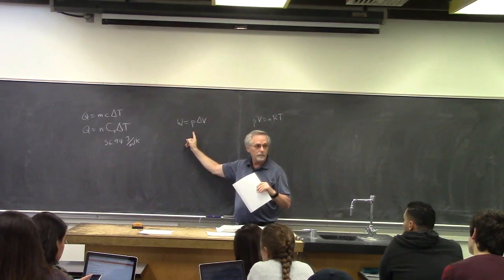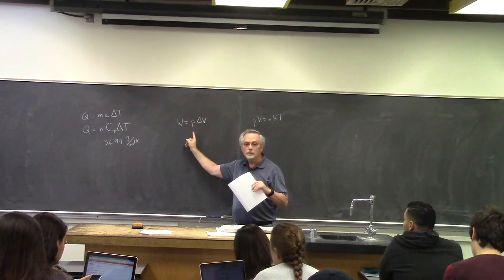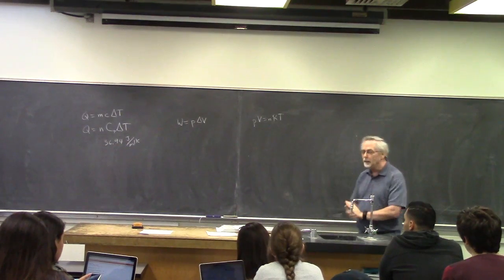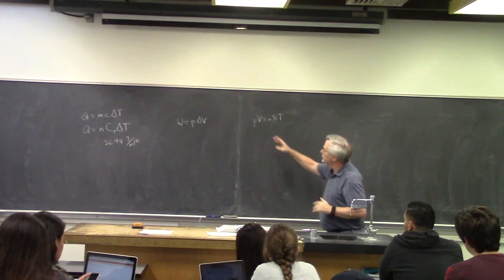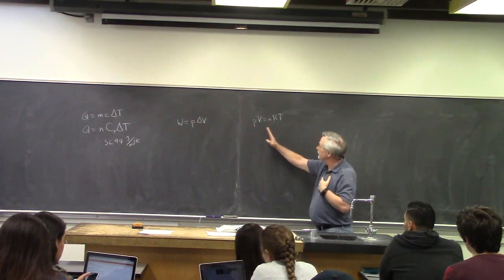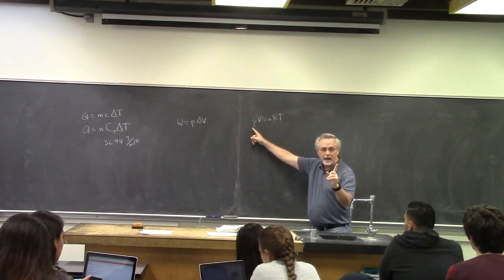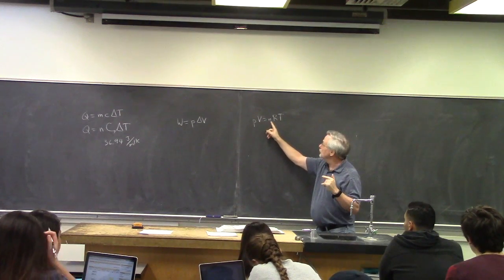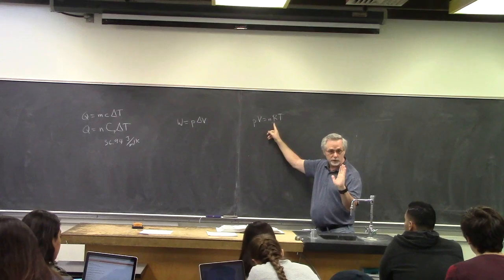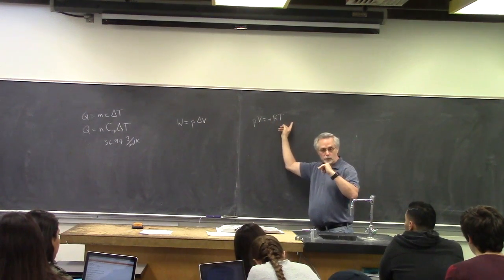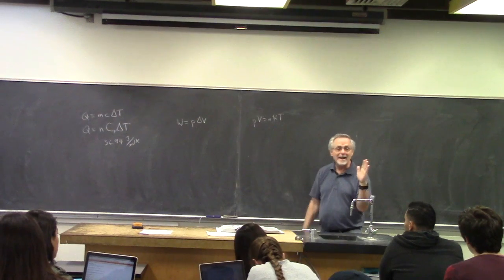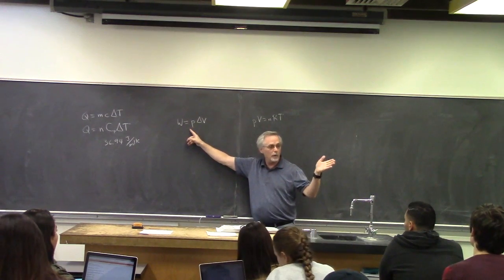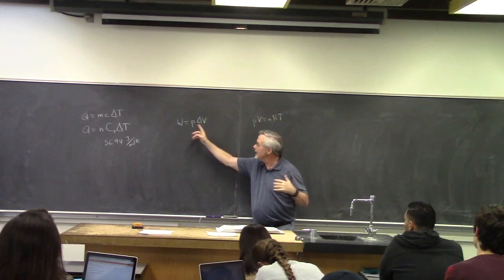From the ideal gas law, the problem states one atmospheric pressure, initial temperature 27°C and final temperature 127°C. Since n and R are known — R is just a constant — I can calculate V at 27° and V at 127°, giving me ΔV. Pressure is one atmosphere, convert to 1.01×10⁵ Pa, multiply by ΔV, and now you've found the work.